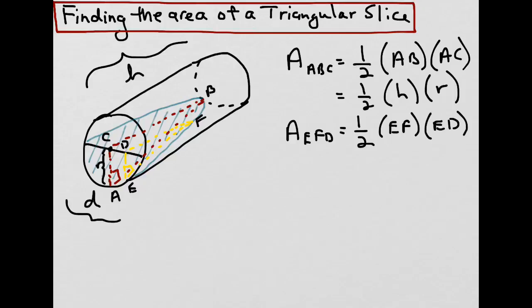But how do we then determine EF and ED in terms of H and R? Well, we know that the corresponding angles of ABC and EFD are the same. Therefore, they are similar triangles, and therefore there is a relationship between the sides of these triangles.